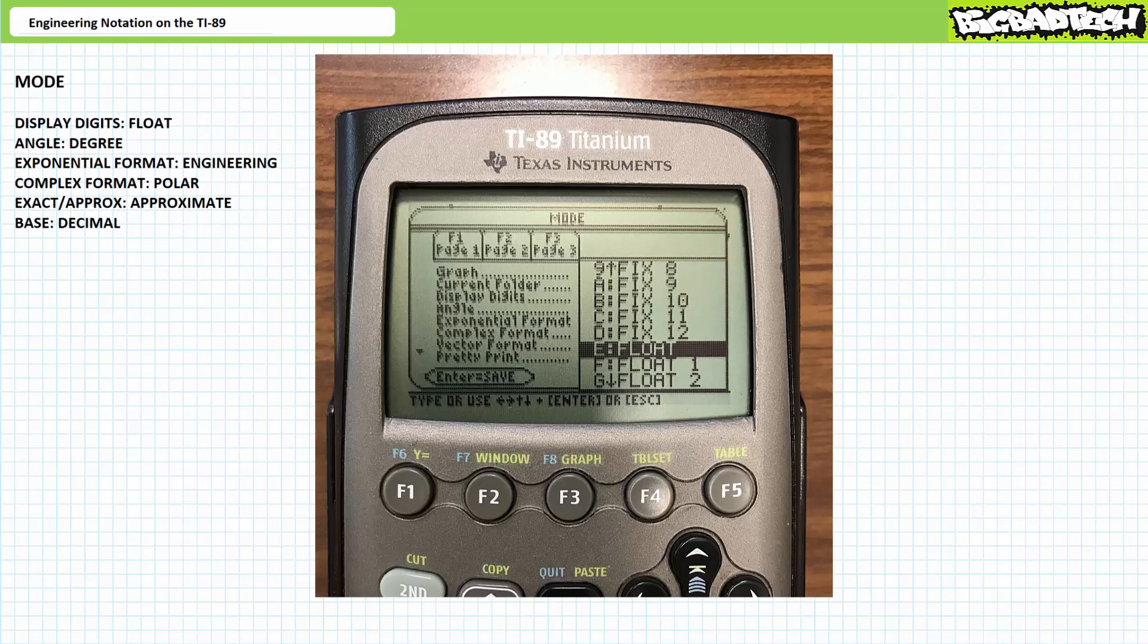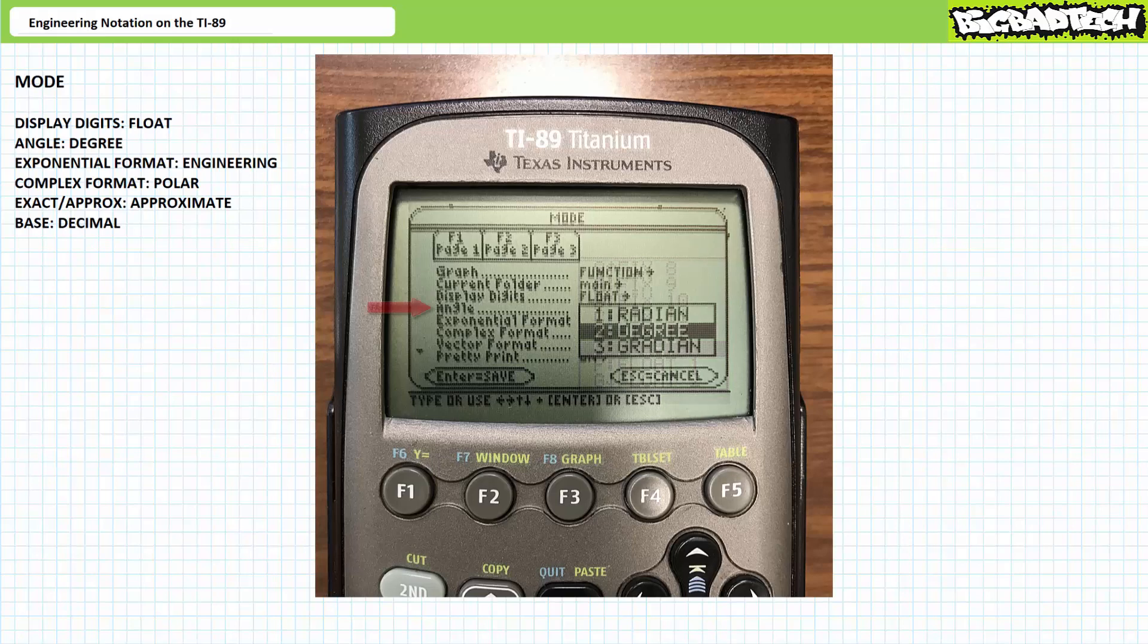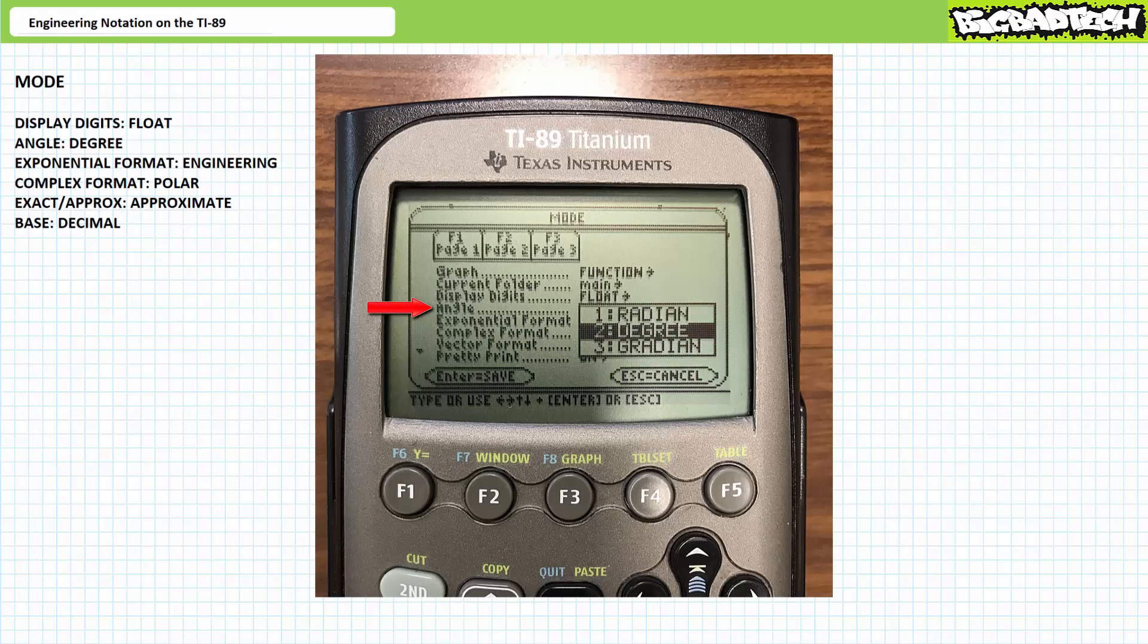Option E, between D, fix 12, and F, float one. Press enter to save this option. Walk down to the angle entry using the down arrow key and press the right arrow key to access the menu. Walk down the list with a down arrow key. The option I'm gonna choose is two degrees. Press enter to save this option.